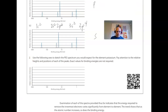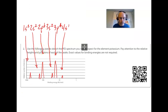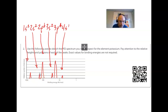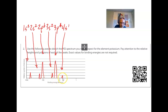For the second practice problem, potassium's electron configuration is 1s2, 2s2, 2p6, 3s2, 3p6, 4s1, so we expect to see six peaks. The 1s and 2s peaks should be the same height. The 2p peak should be three times the height of the 1s and 2s peaks. The 3s peak is the same height as 1s and 2s. The 3p peak is also the same height as the 2p peak. And the final 4s peak has to be half as high as the 1s, 2s, and 3s peaks. That is potassium's PES diagram.